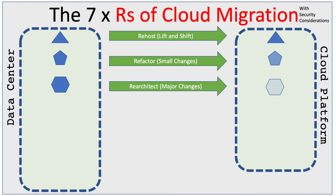The next option is re-architecting, and in this instance it's similar to refactoring but the changes are more major. We could consider making some re-architectural changes when it comes to security — for example, placing a WAF firewall in front of the application, or deciding to store our credentials in a key vault in the cloud that didn't exist in our data center.